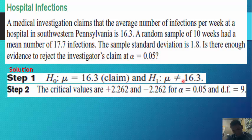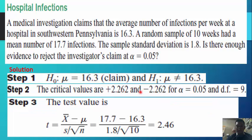We find the degrees of freedom by subtracting one from the total random sample of 10 weeks, giving us 9. We obtain these critical values from the table. Then, computing the test value by substituting into the formula, we obtain t equal to 2.46.